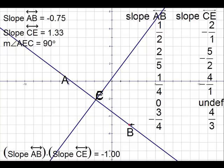And again, writing these decimals as fractions makes it easier to see that their product is negative 1. Not only do perpendicular lines have to intersect to form right angles, the product of their slopes has to be negative 1 unless one line is horizontal and the other line is vertical. Then you have a zero slope and an undefined slope.